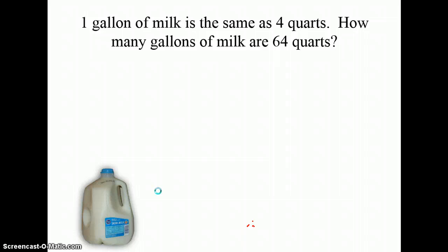Okay, so try this one on your own. One gallon of milk is the same as 4 quarts. How many gallons of milk are in 64 quarts? Well, first ask yourself, what information have you been given? You've been given a rate, or a unit rate, of quarts per gallon. So you can either solve this problem using a table or a proportion. Pause the video and solve this problem on your own. When you're done, press play.